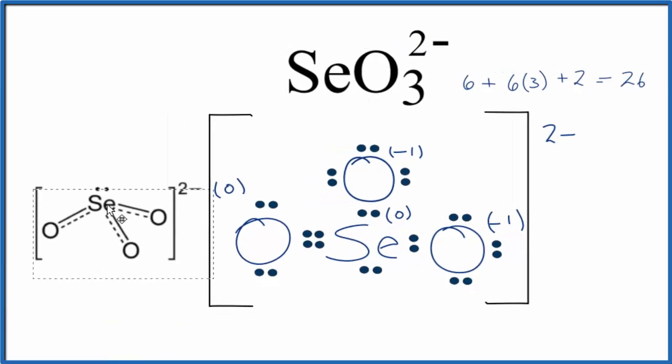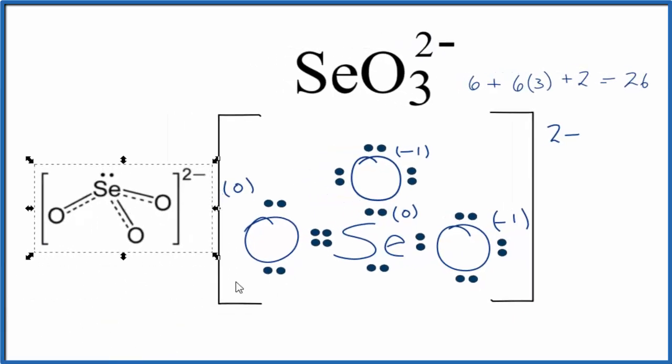In reality, what we end up with is an average of those three resonance structures. So you could draw it like this here to show that there's the average there. This is our lone pair here and then up here.